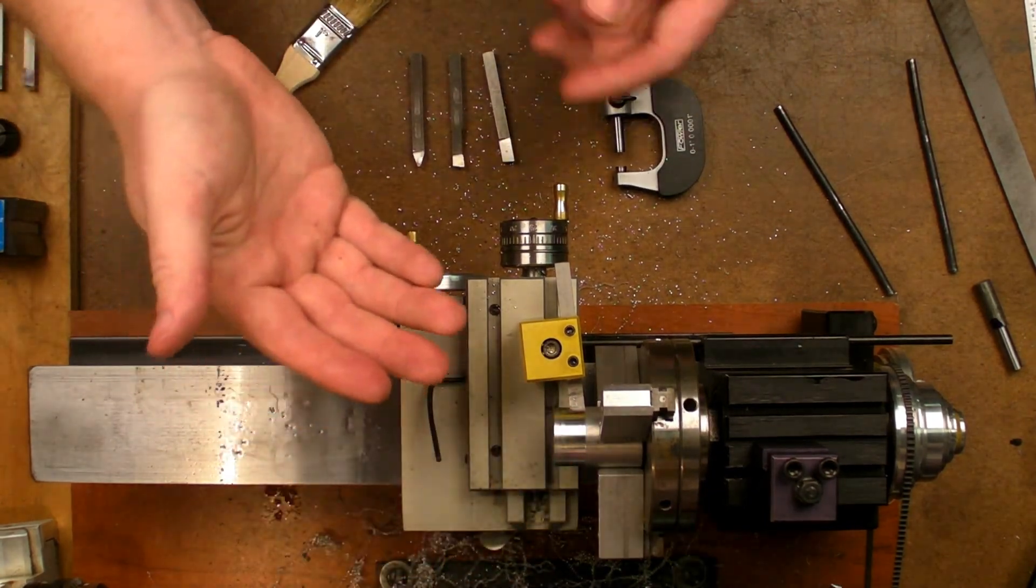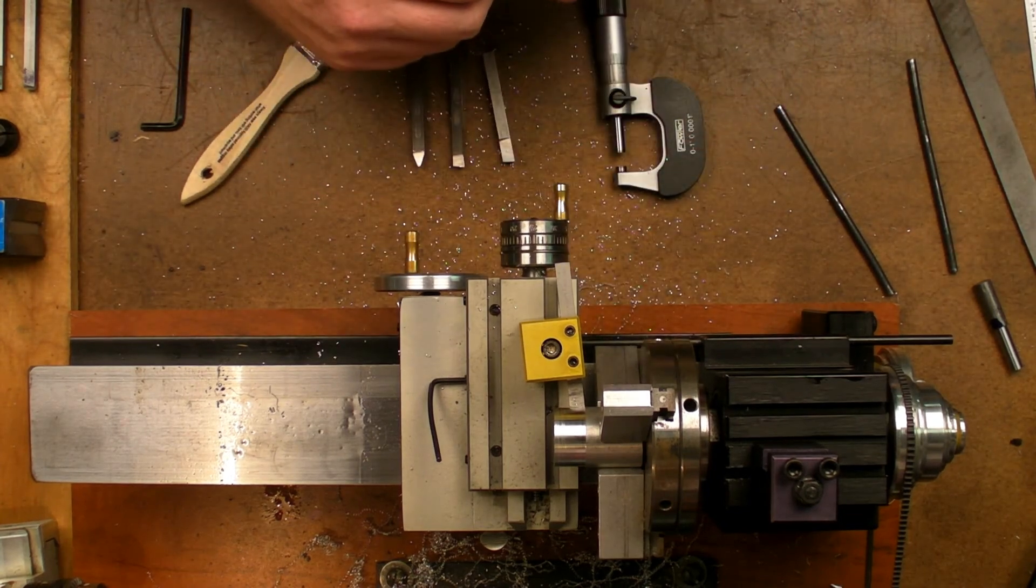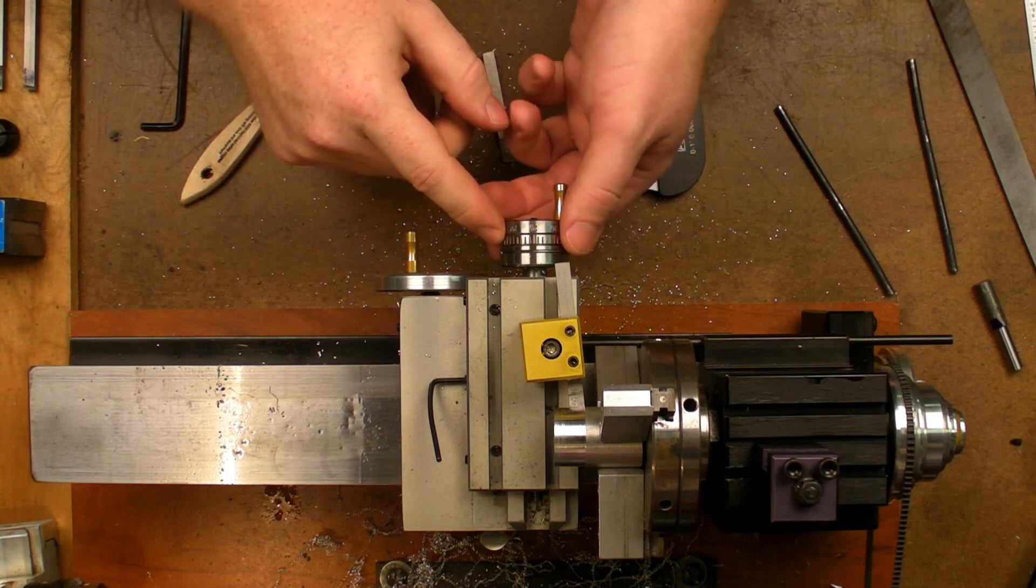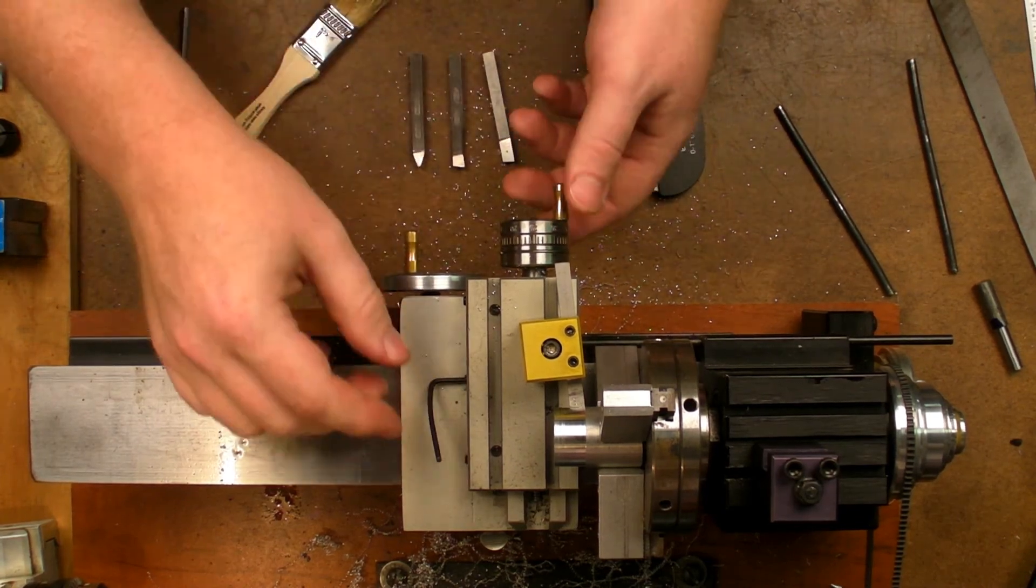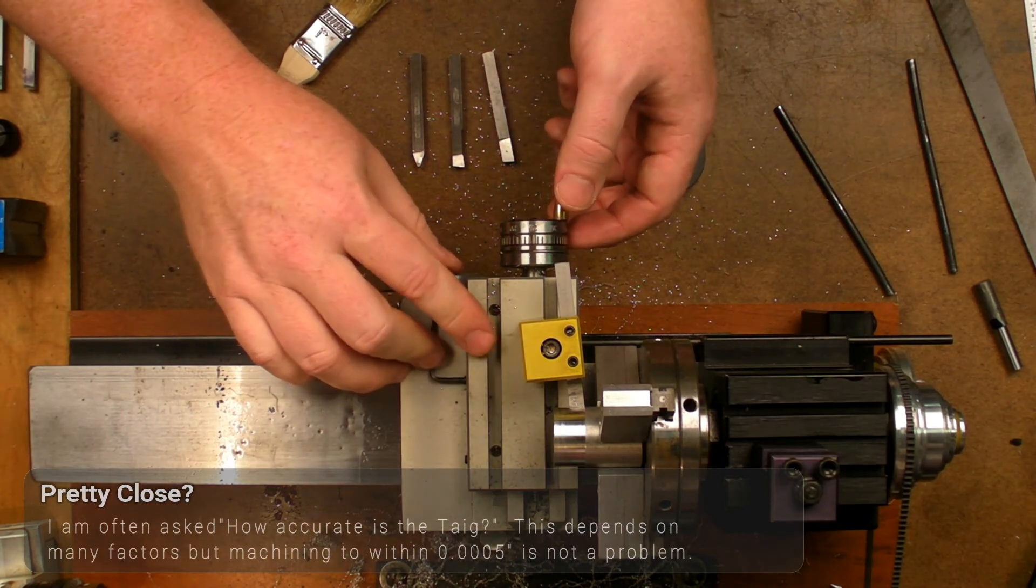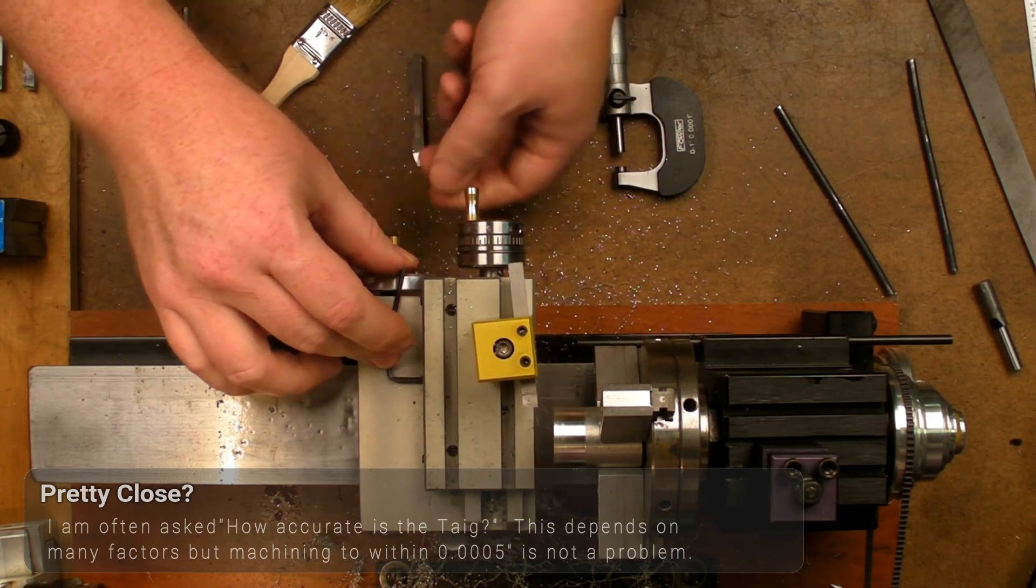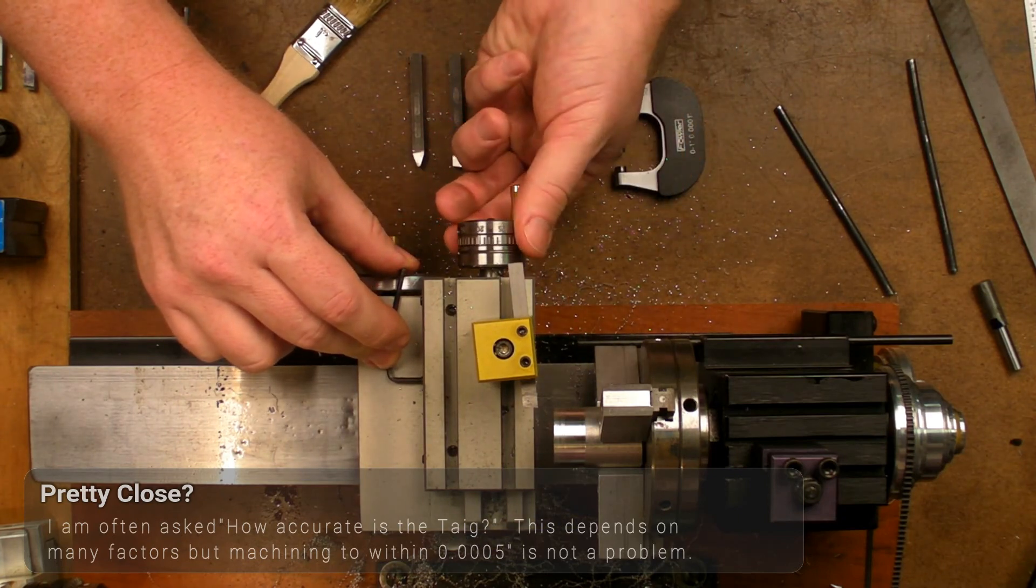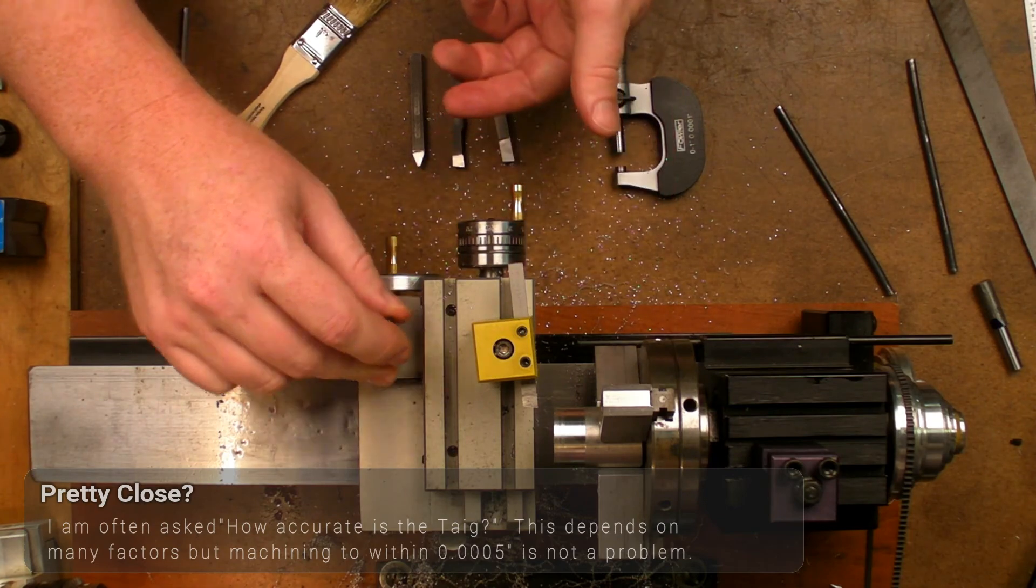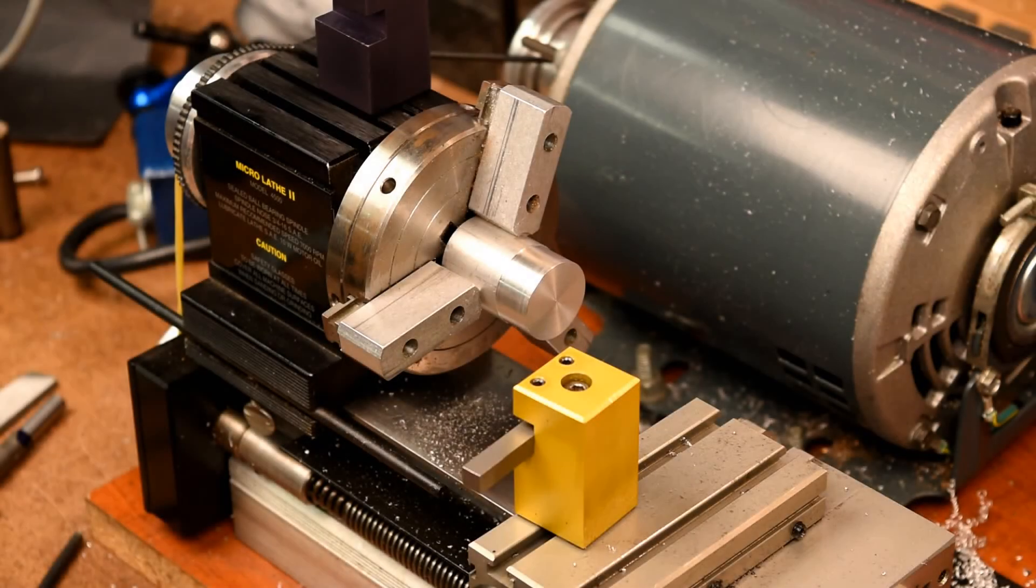Now that we've trued the stock, we can measure it and then calculate our desired reduction in diameter. And using the cross slide dial, we can determine how far we need to go and get pretty close. So we're at the number 25, unlock the cross slide, back off the material, move away, back to the 25 mark, and then decide where we want to go from there to achieve our desired diameter.